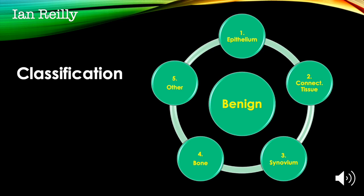I really like a classification system. Unfortunately I can't remember where this classification came from, so apologies to the authors. What they present is a simple classification system for both malignant and benign tumours. For benign tumours, they look at the tissue of origin — whether they're coming from the epithelium, connective tissue, synovium, bone, or some other tissue. For epithelium tumours we'd be thinking about inclusion cysts, but also verrucas and various other keratoses.